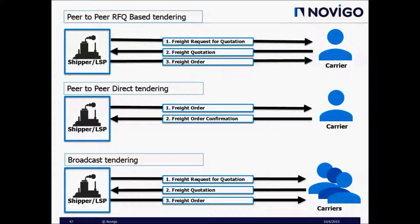Now let's discuss different ways of doing tendering. The first method is RFQ-based tendering, where the shipper or LSP sends a freight request for quotation to the carrier, the carrier responds with a freight quotation, and then the shipper or LSP either awards or rejects the carrier. In direct tendering, the shipper or LSP tenders the freight order directly to the carrier, who either confirms or rejects it. In broadcast tendering, the shipper or LSP sends a freight RFQ to multiple carriers simultaneously, then either accepts the first acceptable offer or the best offer.